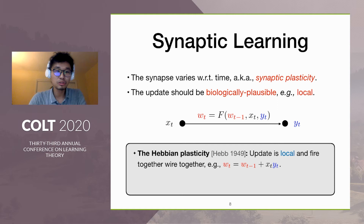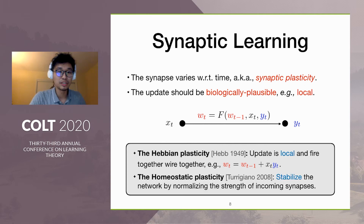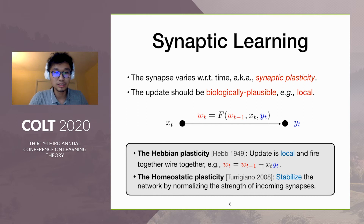However, a simple implementation of Hebbian plasticity is not stable in the sense that the weight might be driven unboundedly. So another important biological criterion we need to meet is homeostatic plasticity, which states that the synaptic weight should be stabilized.